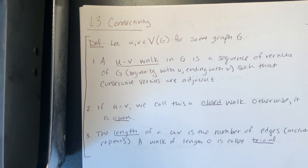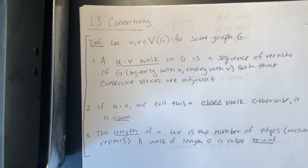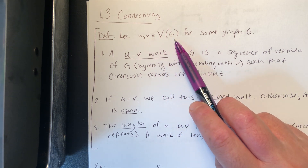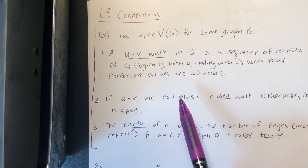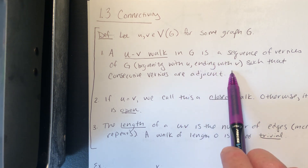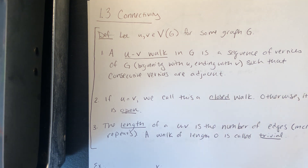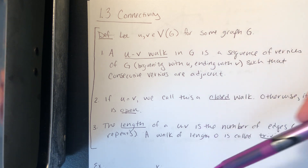In section 1.3 we talk about the connectivity of a graph, which gets at the idea of whether or not it's possible to go from one vertex in the graph to another by traveling along edges. We start with a few definitions. Let u and v be vertices in some graph G. A u-to-v walk in G is a sequence of vertices of G starting with u and ending with v, such that consecutive vertices in your list are adjacent — in other words, a way of traveling along edges from u to other vertices.